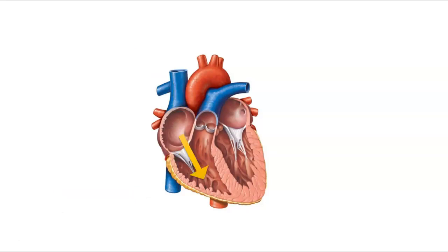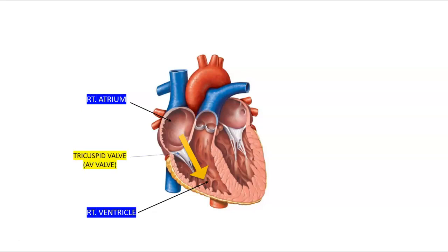From the right atrium, blood enters the right ventricle via the tricuspid valve, or the AV valve, also called the atrioventricular valve, because it's located between the atriums and the ventricles.